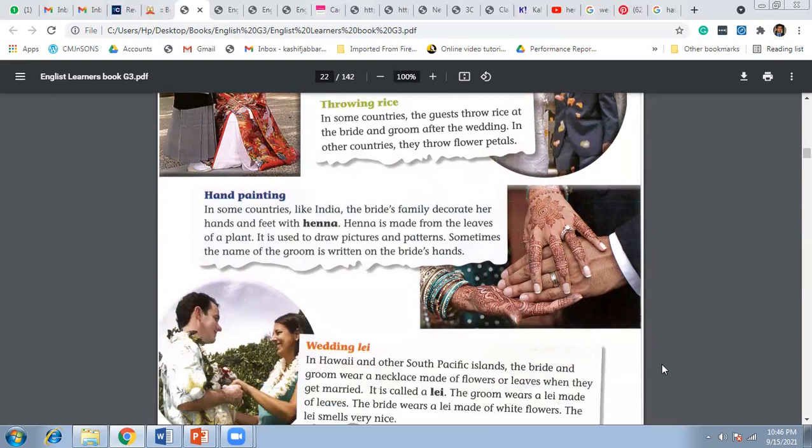Thirdly, it's about hand painting. In some countries like India, the bride's family decorates her hands and feet with henna. Henna is made from the leaves of plants and is used to draw pictures and patterns. Sometimes the name of the groom is written on the bride's hand. The third picture shows the bride's hands colored with henna in red. These are called patterns.